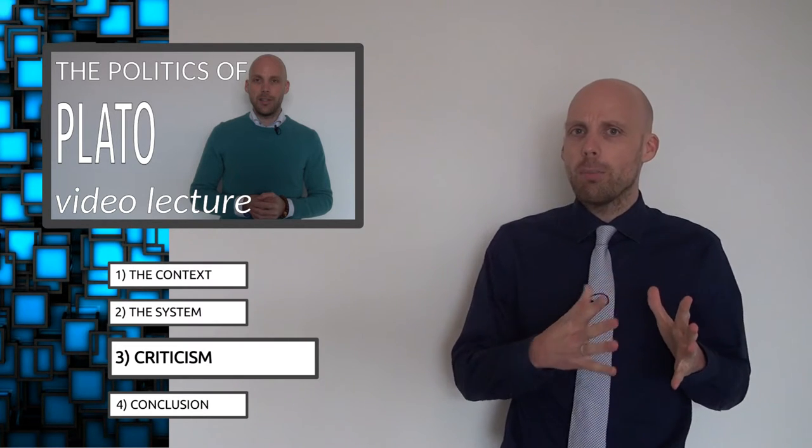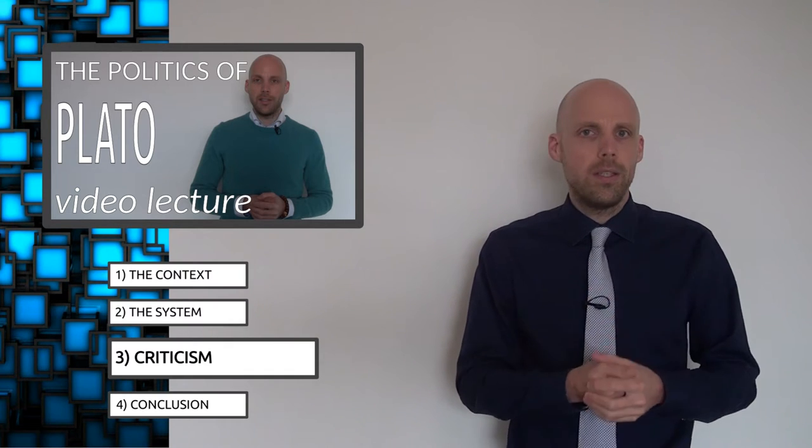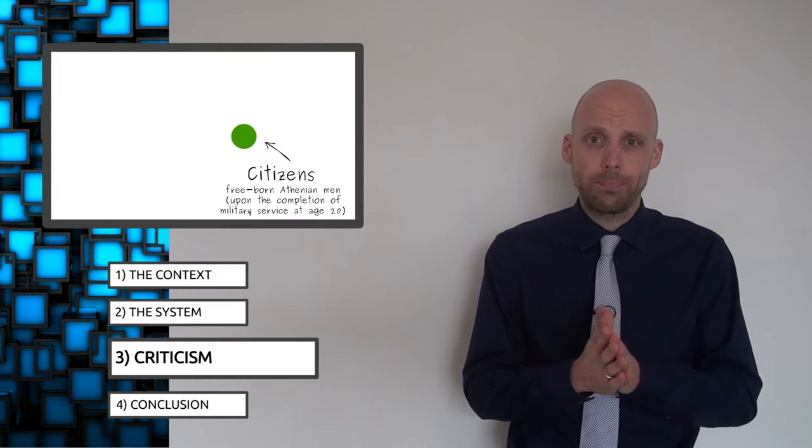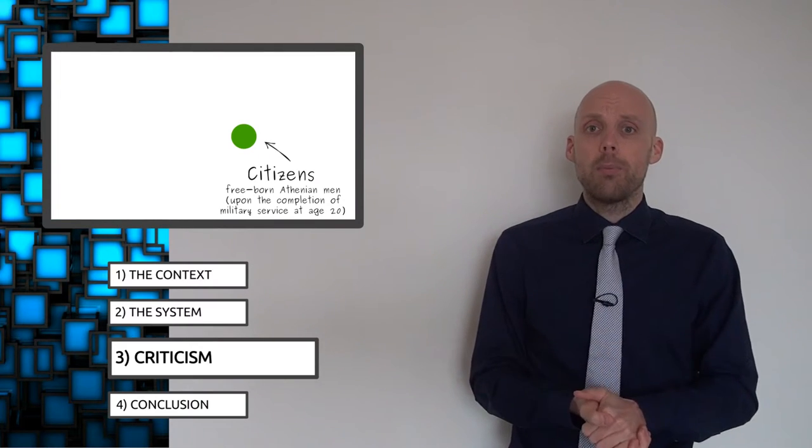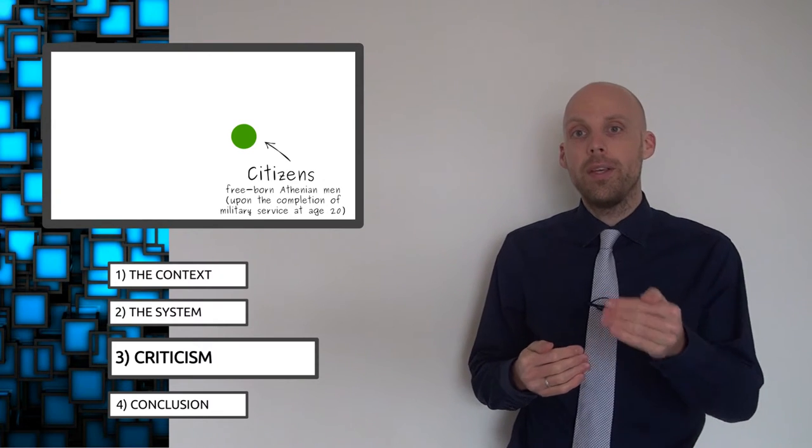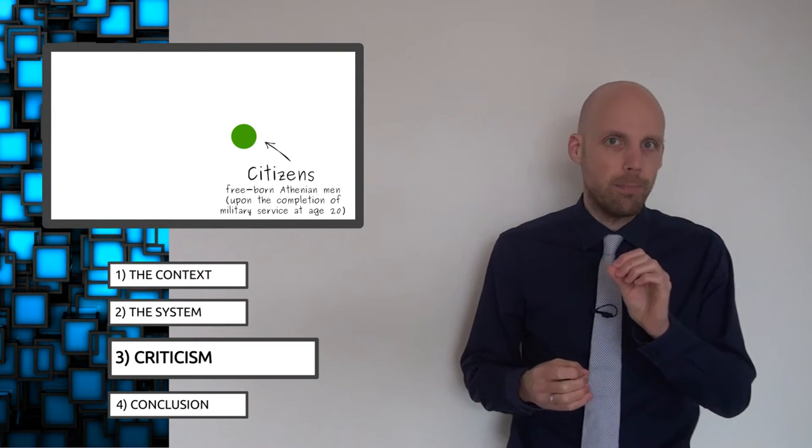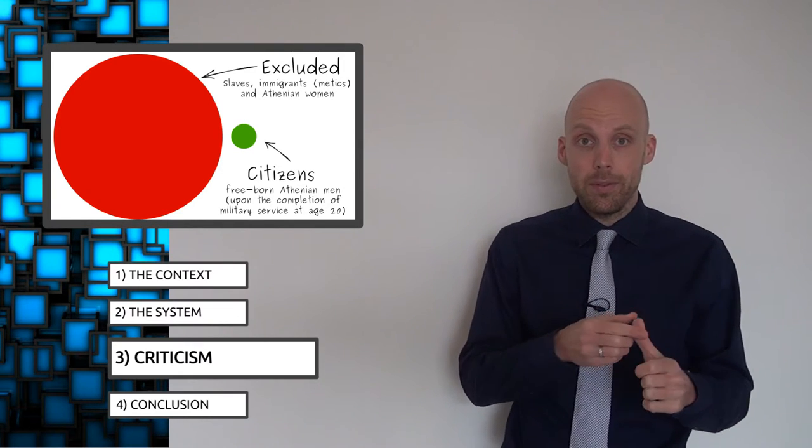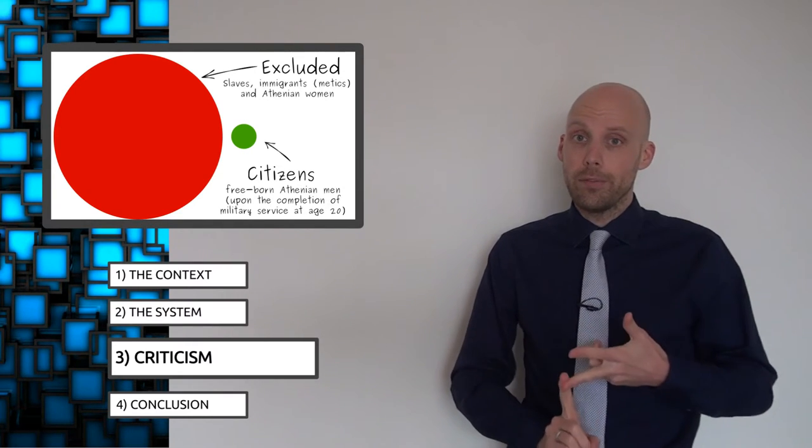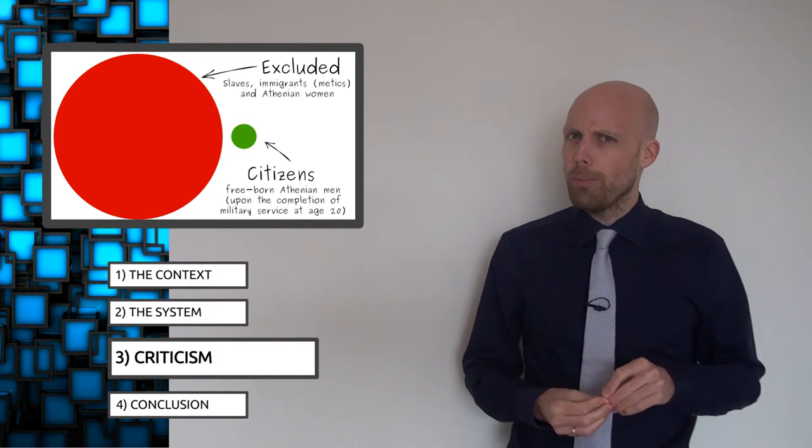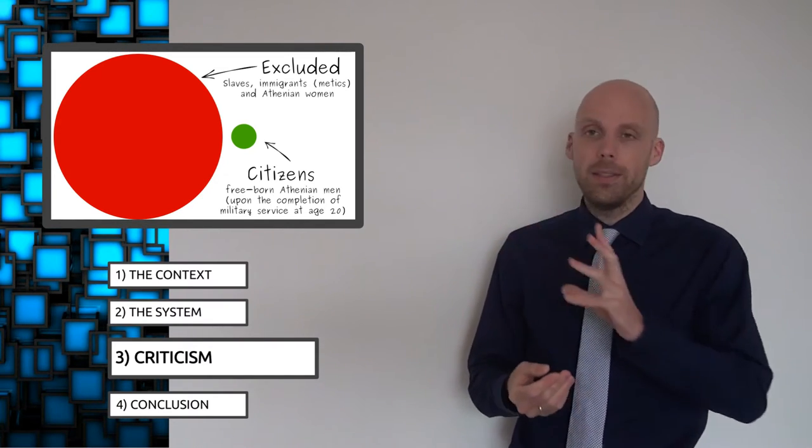But if we're going to talk about the shortcomings of ancient Athenian democracy, it's hard to overlook its exclusive nature. These are the people that were actually allowed to participate. Free male Athenian citizens over the age of 20. These are the people that were excluded. Native Athenian women, immigrants and slaves. And all of a sudden it doesn't look like such a great system anymore.